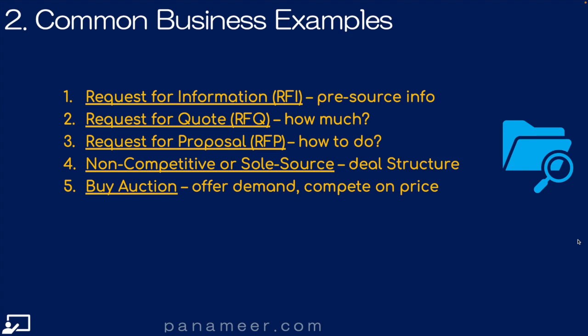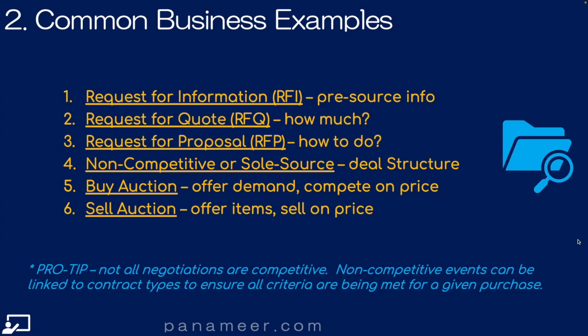Next, we have a buy auction. Here I'm going to offer up the demand — 500 laptops — and I'm going to have everybody compete on price, using time to get the best price. The flip of that is a sell auction: I'm going to sell back the items I bought, like the laptops, competing on price and again using time as my weapon. Pro tip: not all negotiations are competitive. Non-competitive events can be linked to contract types to ensure all criteria for that contract type are being met for a given purchase. Also, negotiated contract spend is central to the value of Procurement Cloud.